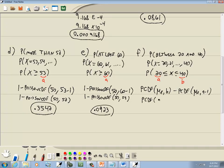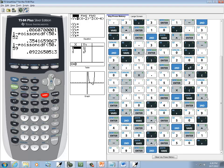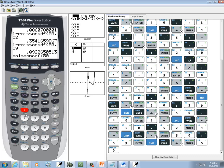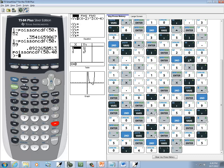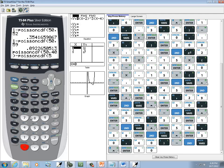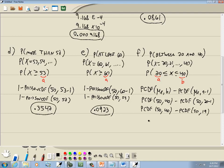So we'll have Poisson CDF, 50, comma, b, which is 40, minus Poisson CDF, 50, comma, a minus 1. So we've got 20 minus 1. So we've got Poisson CDF, 50, comma, 40, minus Poisson CDF, 50, and then 20 minus 1 is 19. So I'll do 2nd vars, Poisson CDF, 50, comma, 40, close parentheses, minus 2nd vars, Poisson CDF, 50, comma, 19. And that gives us 0.0861, rounding to four decimal places. And those will be our answers.